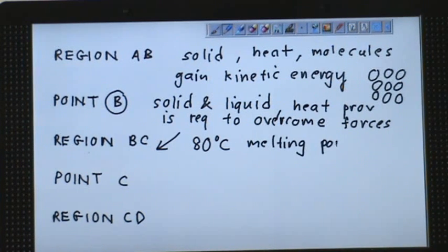During melting point, the heat provided is to overcome the forces of attraction. It's not to make the particles getting hotter. So the temperature is not increasing. The heat provided is used to overcome the forces of attraction. Just imagine in a room, you have 10 kids.